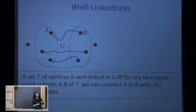If I can do this for every single choice of two equal-size disjoint subsets of the red vertices, then I say that the set of red vertices is well-linked in the graph.